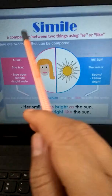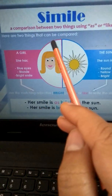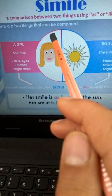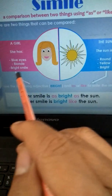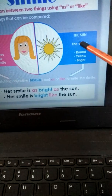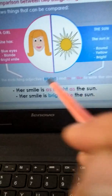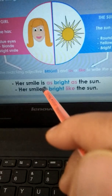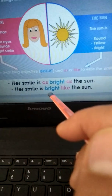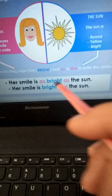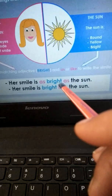Simile means a comparison between two things using 'as' or 'like.' Here are two things that can be compared. For example, a girl has blue eyes, blonde hair, and a bright smile — and we are comparing her with the sun. The sun is round, yellow, and bright. So we can say: 'Her smile is as bright as the sun,' or 'Her smile is bright like the sun.' Here, either we use the word 'as' or the word 'like.' Is it clear?